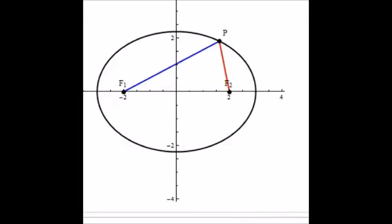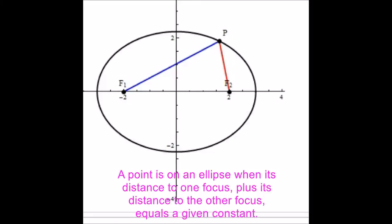What's an ellipse? Given a couple of focus points, or foci, labelled F1 and F2, an ellipse is defined with respect to a constant. You can set that constant to be any positive number, and then it's defined as the set of all points P such that the distance from P to one focus plus the distance from P to the other focus is always constant.